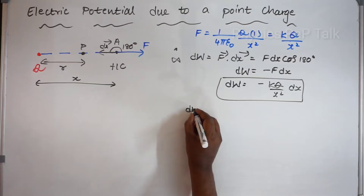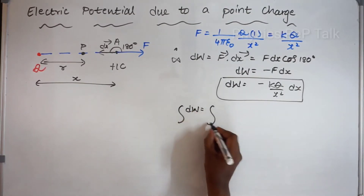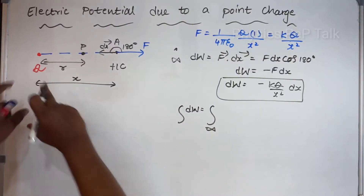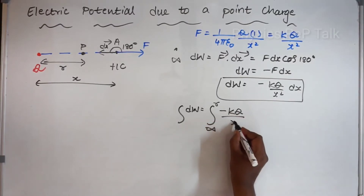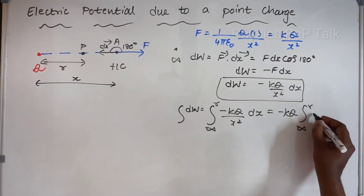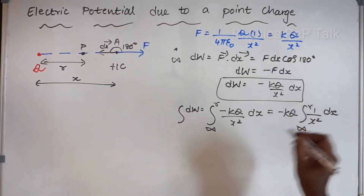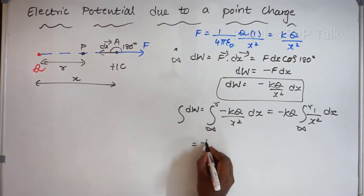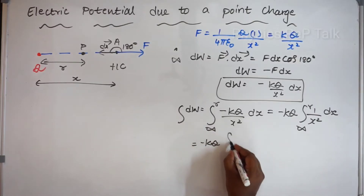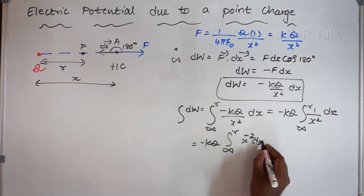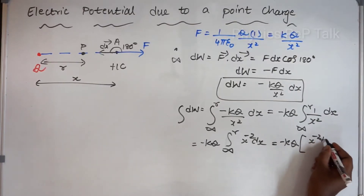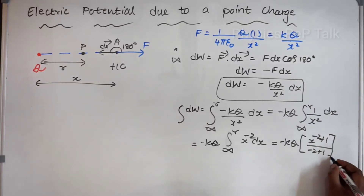The total work W will be equal to the integral from infinity to R of −Kq/x² dx. Taking −Kq as a constant, this becomes −Kq times the integral from infinity to R of x⁻² dx. The integration of x⁻² is x⁻²⁺¹ / (−2+1), that is x⁻¹/(−1), evaluated from infinity to R.